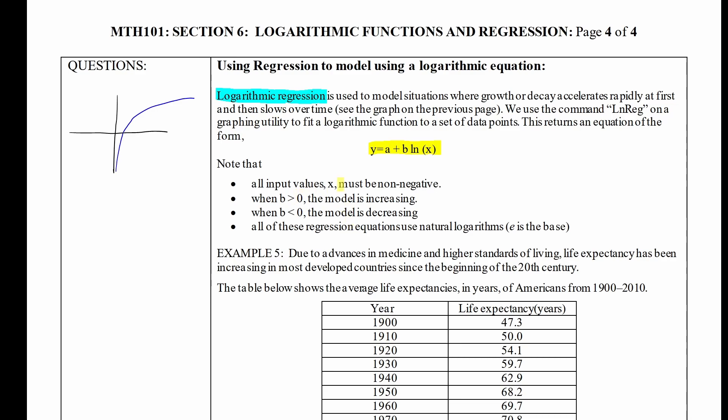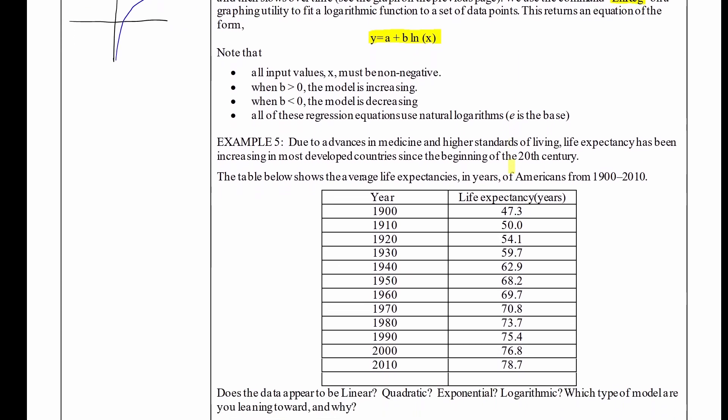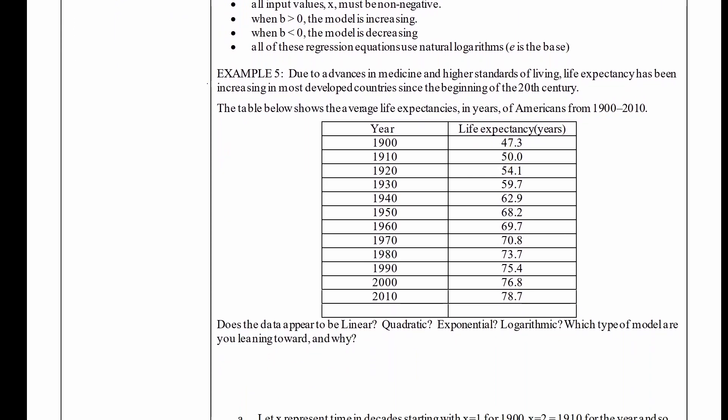In order to find this equation, we're going to be using the lnreg, natural logarithmic regression function, on our graphing calculator. Let's go ahead and look at an example of how to do this. Example 5: Due to advances in medicine and higher standards of living, life expectancy has been increasing in most developed countries since the beginning of the 20th century. The table below shows the average life expectancy in years of Americans from 1900 to 2010. So we have the year and we have the life expectancy.